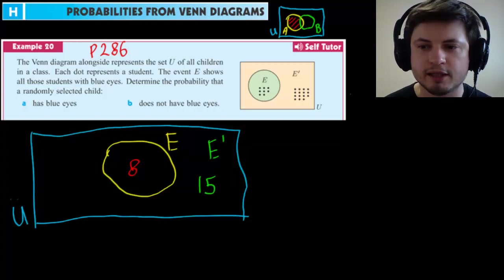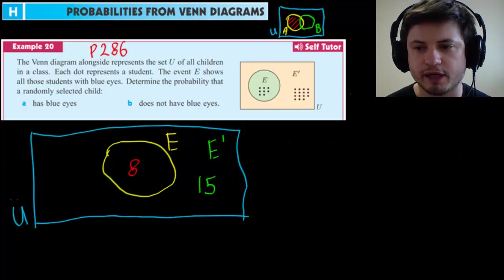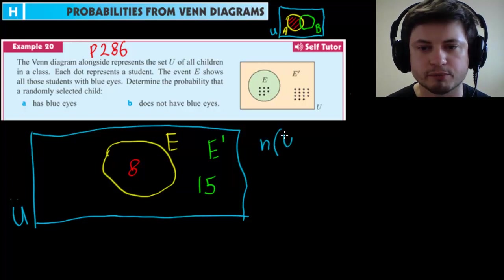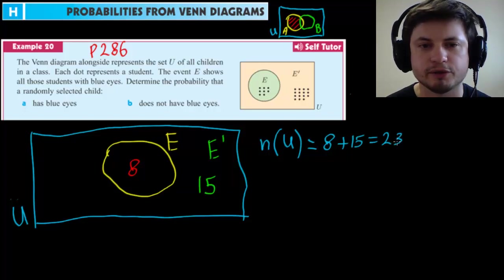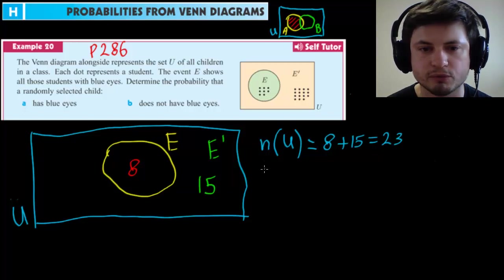Now we just have to solve this question. To solve this question, it works a little bit different from the regular Venn diagrams because here we're looking at probability. So we're actually going to be dividing by the total number of students. First of all, we need to find our set U. So we're going to use Venn diagram notation for this. What is the number of all numbers in set U in the universal set? The total number is eight plus 15, which is 23. So there's totally 23 students in this class. Now, what is the number of E? Well, it's eight.